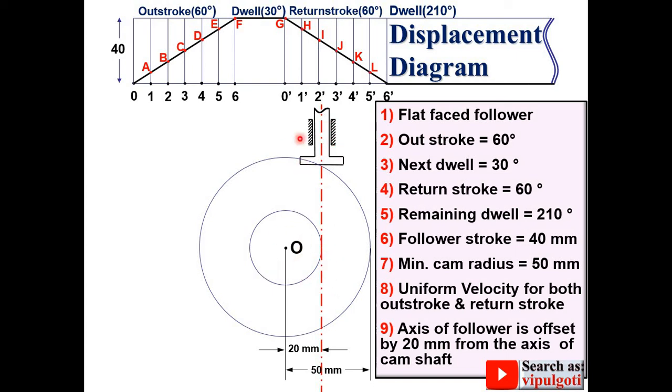Draw the vertical line tangent to this offset circle. Then you can show this flat face follower symbol over here. Mark this intersection point as 0. Join this 0 to O with straight line. Now the direction of the cam rotation is not given to you, so you can assume it in clockwise direction.